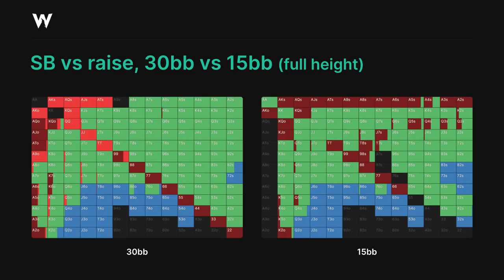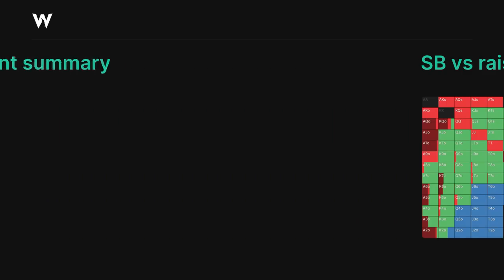Our suited ace hands also prefer to limp jam, even though they play fairly well as limp calls — they just have very good equity when called, plus good blocking power. We're also limp jamming a small frequency with some of the suited queens and some other middle suited hands, but again, these hands aren't limping that often to begin with at this stack, they were open jamming a lot instead.